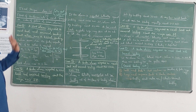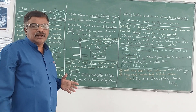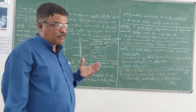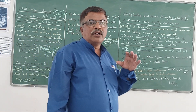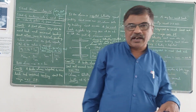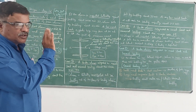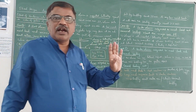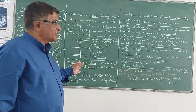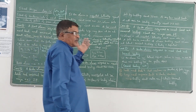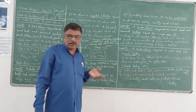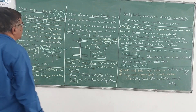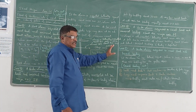In an earlier lecture, I gave one graph — a moment-rotation graph or force-deflection graph — and explained the different types of failures in one of the earlier video lectures. So the behavior of beam columns has been explained. In this lecture, I am going to explain the five different cases.